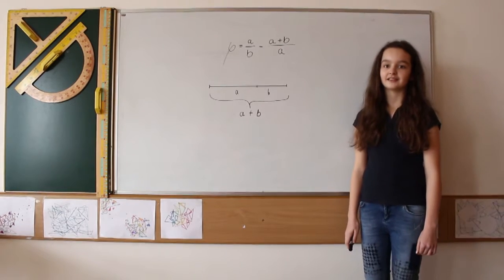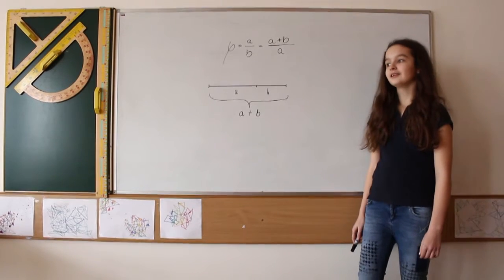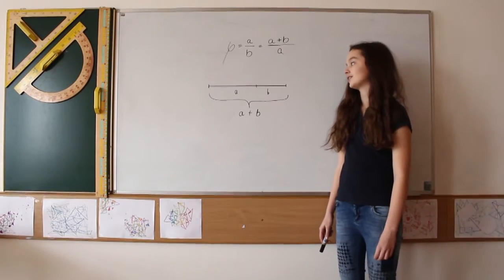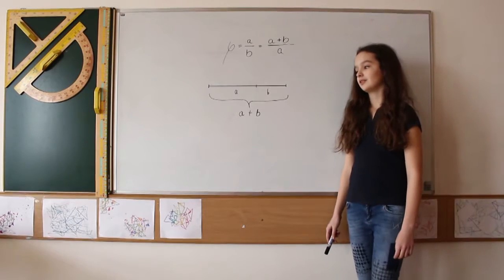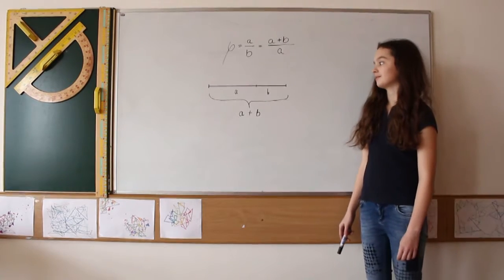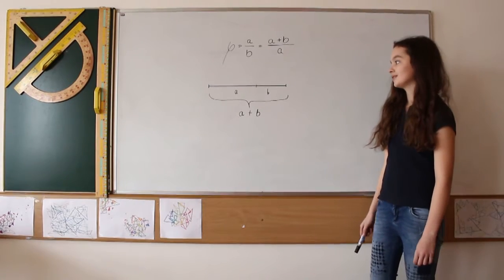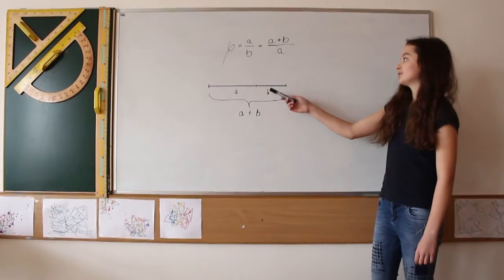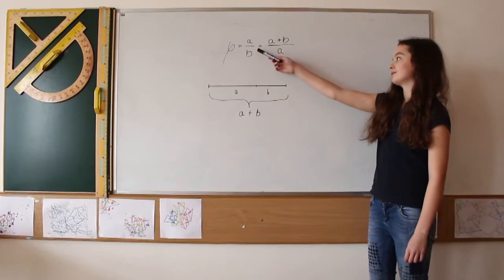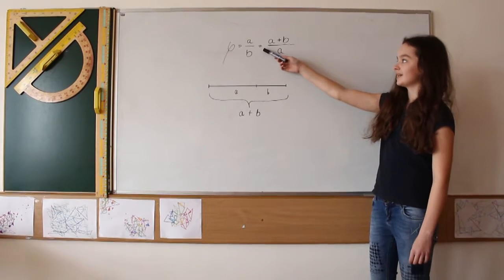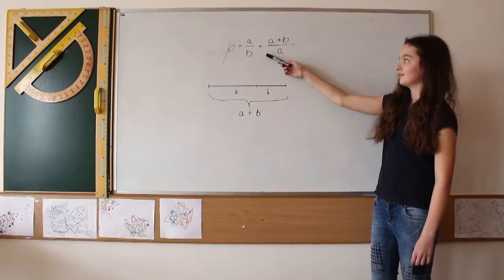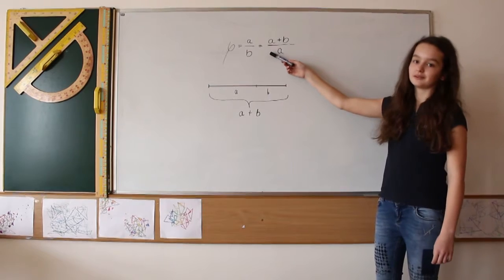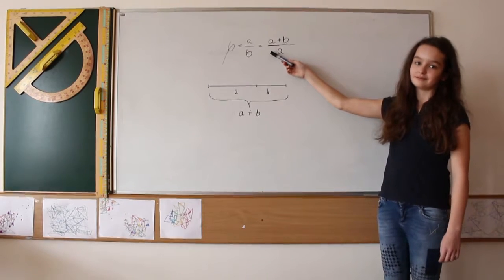What is the golden number? The golden number is the result of a division. The number depends on the division of a segment into two parts so that the proportion of the longer segment to the shorter segment is the same as the proportion of the longer segment to the whole segment.